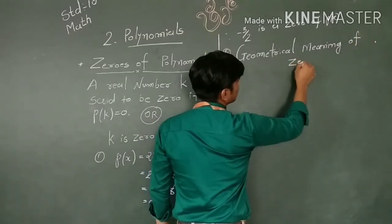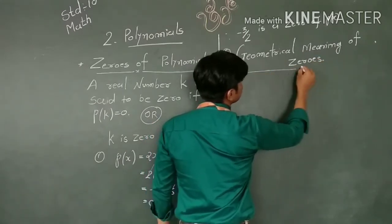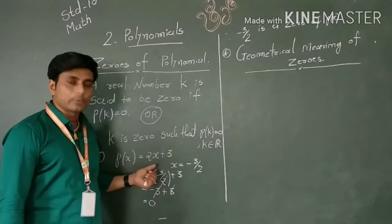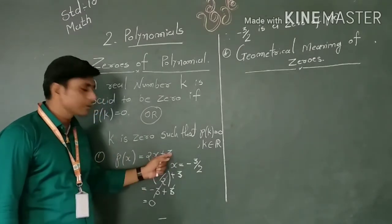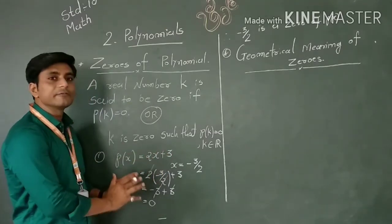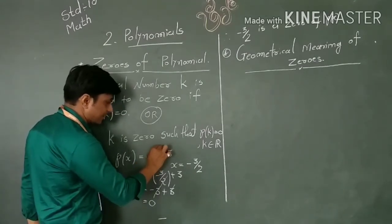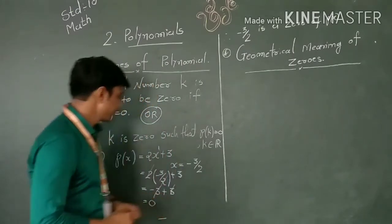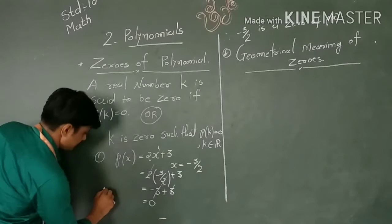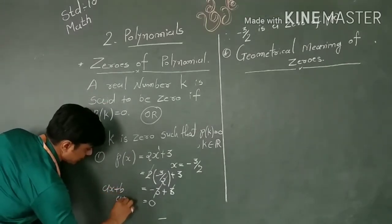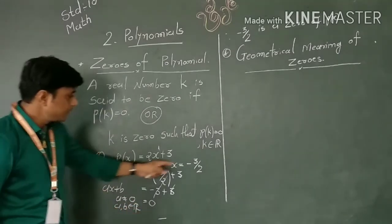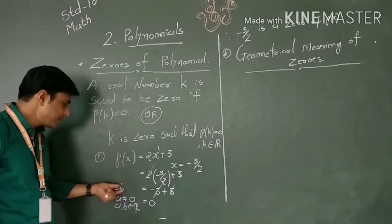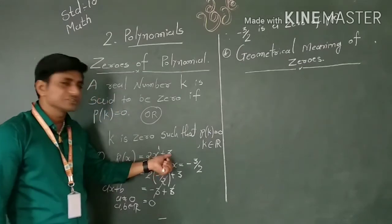Geometrical meaning of zeros. In our previous video, we already learned about a linear polynomial. We take the example of a linear polynomial — it has degree 1, variable x with power equal to 1. The standard form of a linear polynomial is ax plus b, where a is not equal to zero and a, b belong to R. This polynomial has a single term with variable x and a constant term.